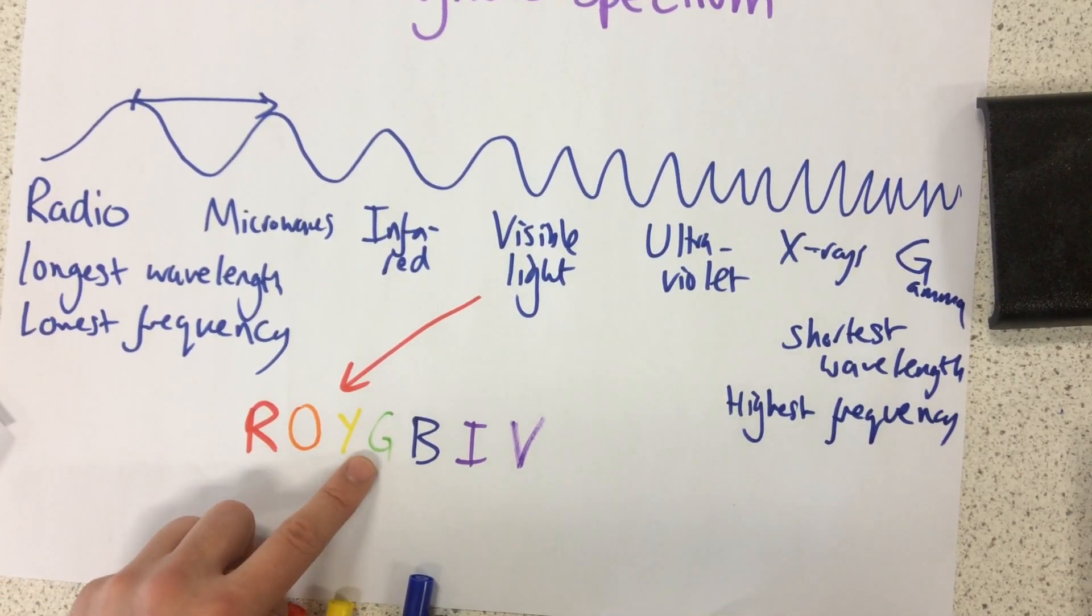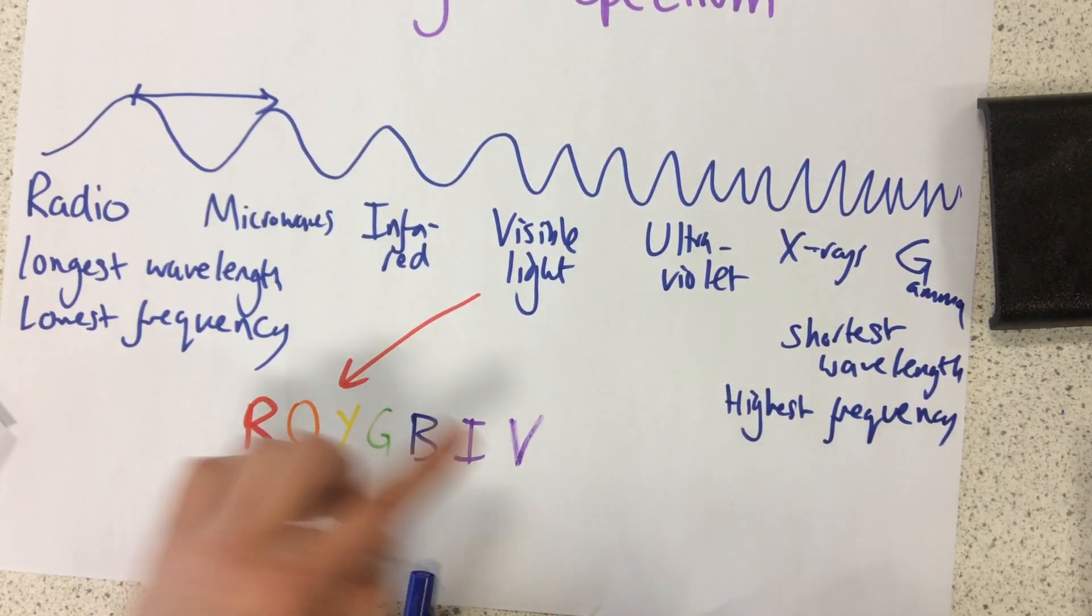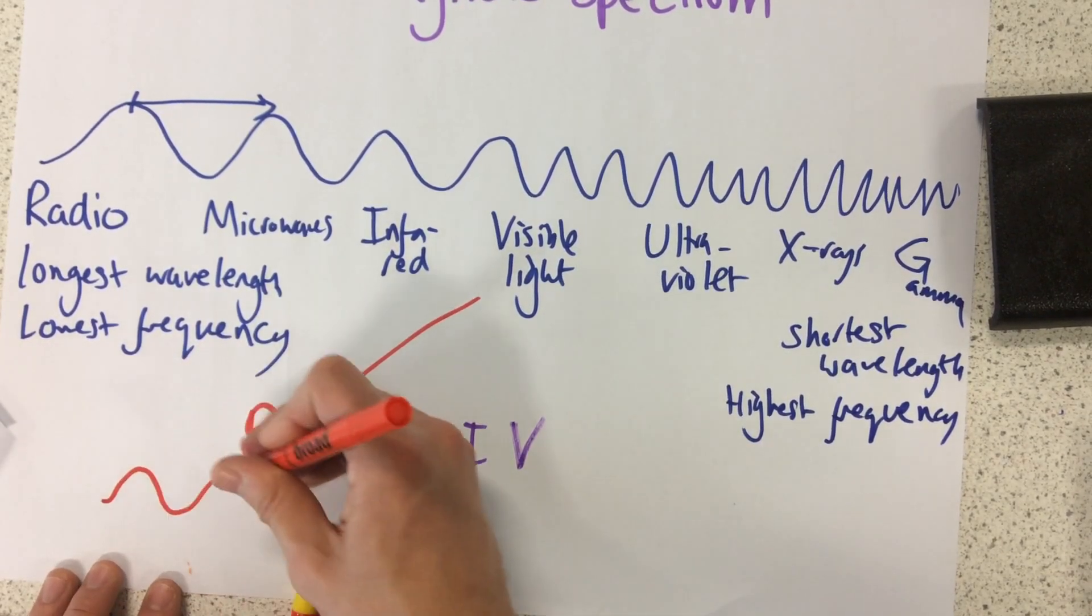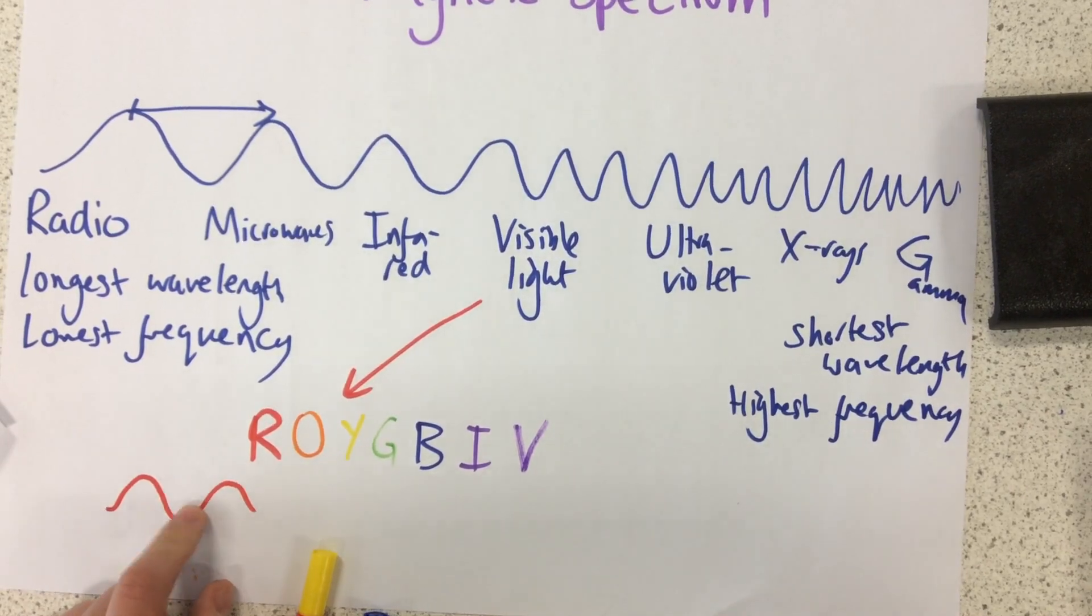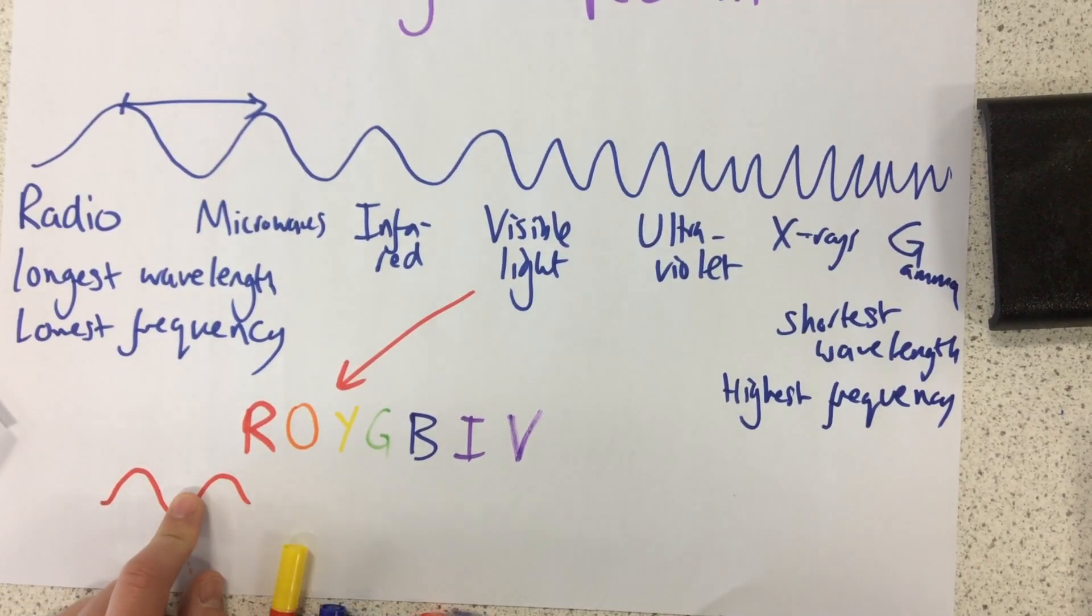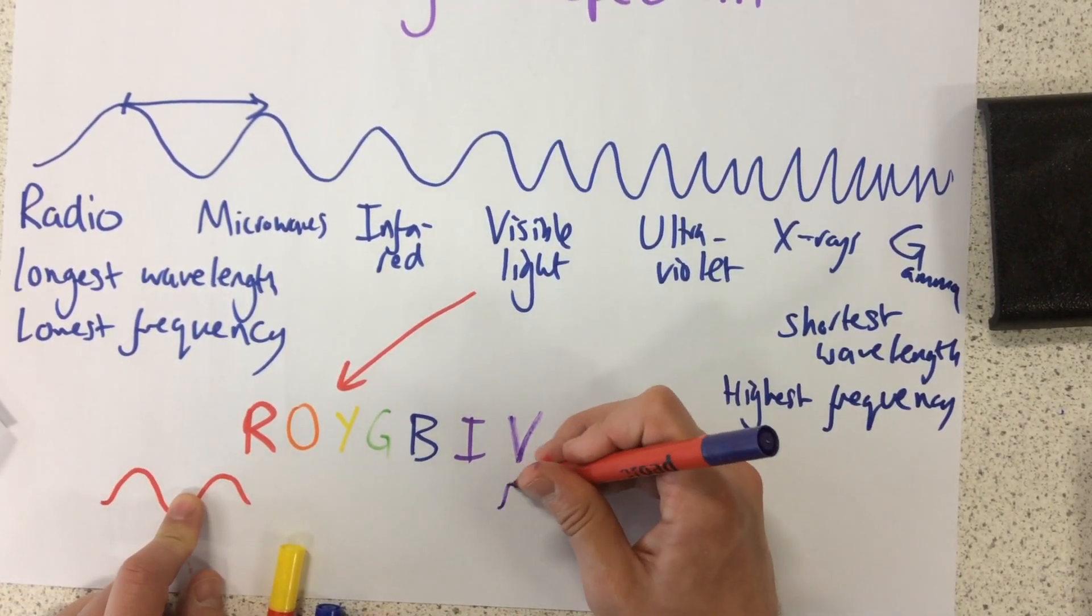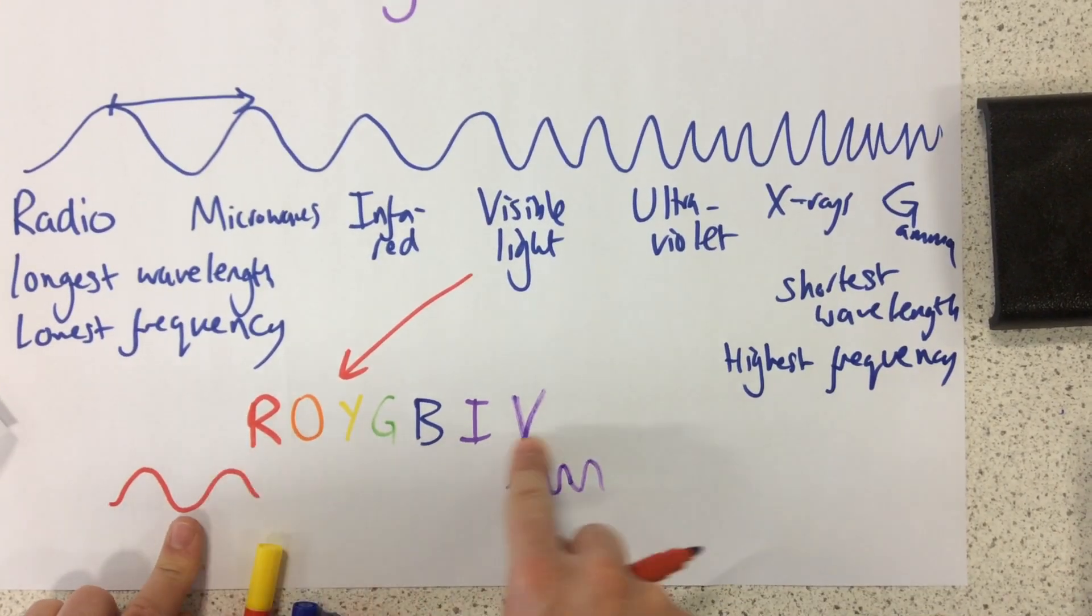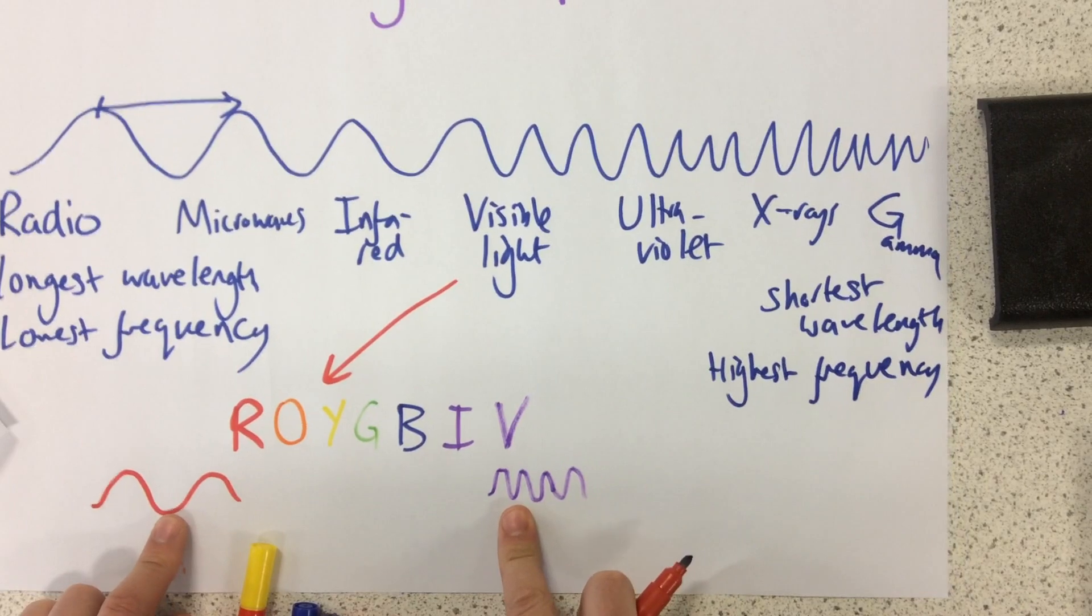Red, orange, yellow, blue, sorry, green, blue, indigo, violet. So, this means red is the part of the visible light spectrum that has the longest wavelength. Violet is the part that has the shortest wavelength. So, all of these different colours appear different due to their different wavelengths.